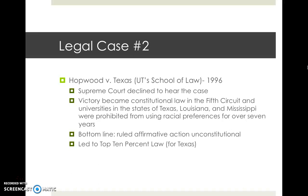Hopwood filed a lawsuit against the university, and it ended up being a historic victory in the Fifth Circuit Court of Appeals. The Fifth Circuit ruling barred all use of racial preferences in university admissions in the states under that court's jurisdiction. Since the Supreme Court declined to hear the case, the victory became constitutional law in the Fifth Circuit, and universities in Texas, Louisiana, and Mississippi were prohibited from using racial preferences for over seven years. Essentially, the ruling found affirmative action unconstitutional, and it also led to the top 10% law, which comes up in the next case.